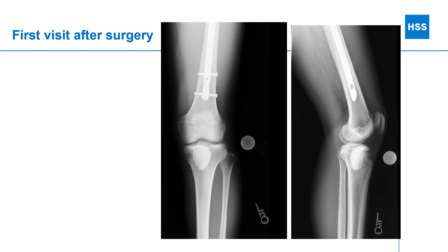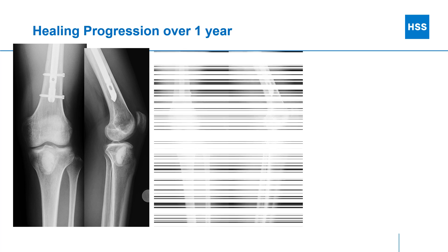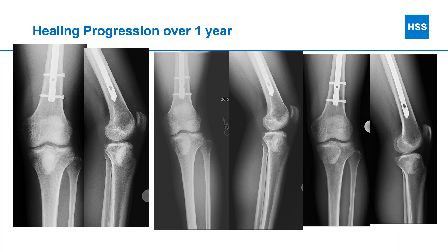This was the first visit after surgery for the patient, and you can see the bone is filled with that absorbable cement, which initially is much denser than the surrounding bone. Here you can see how the healing of that bone cavity takes place over the following year. The healthy bone begins to invade the bone cement, replacing it with normal bone matrix, and subsequent x-rays show the bone cement gets smaller and smaller until it's replaced entirely by normal healthy bone.